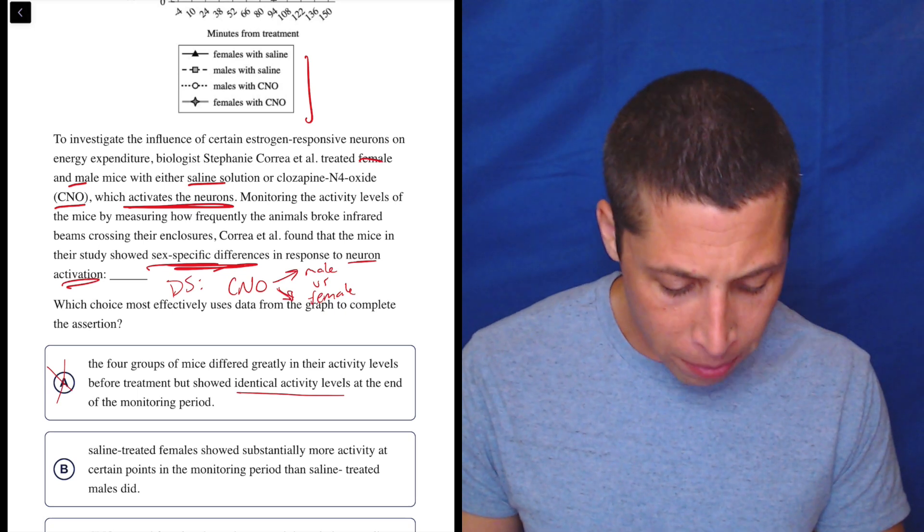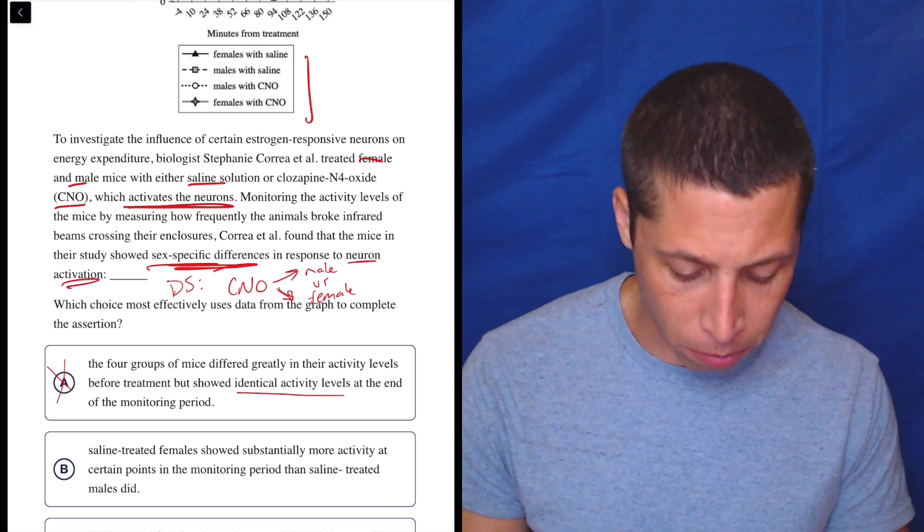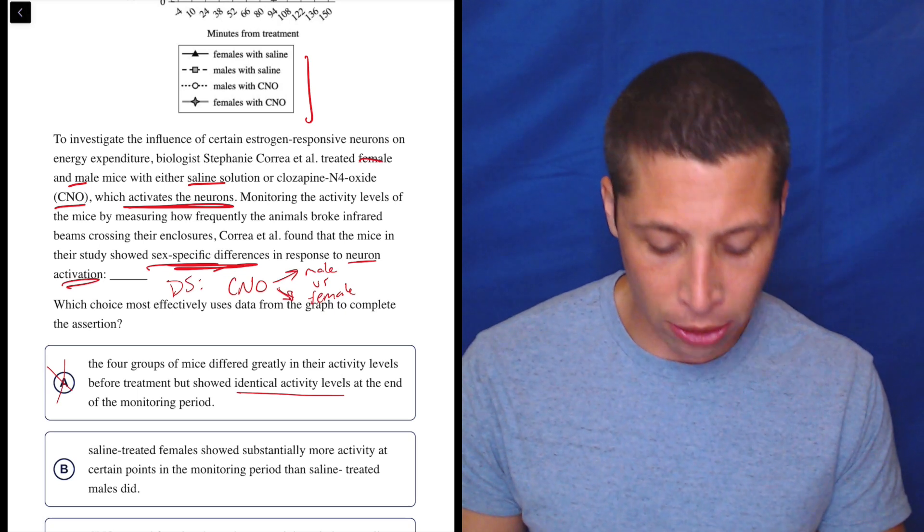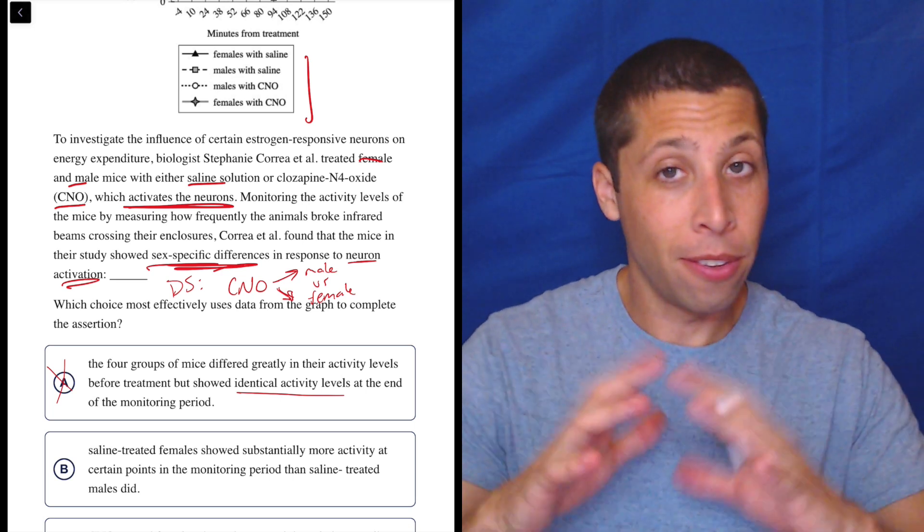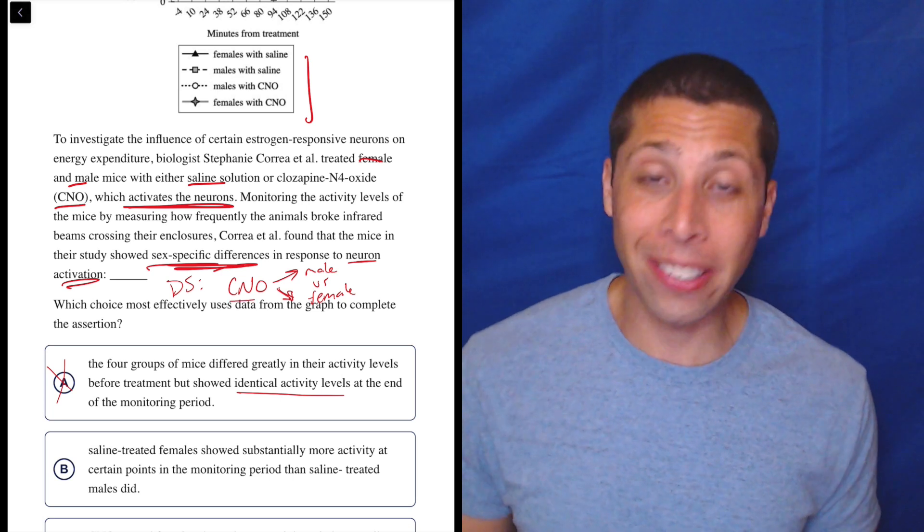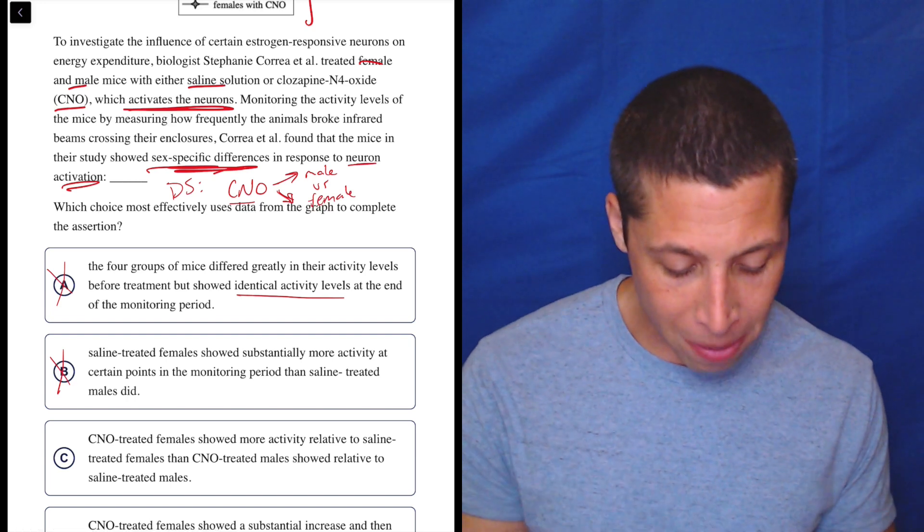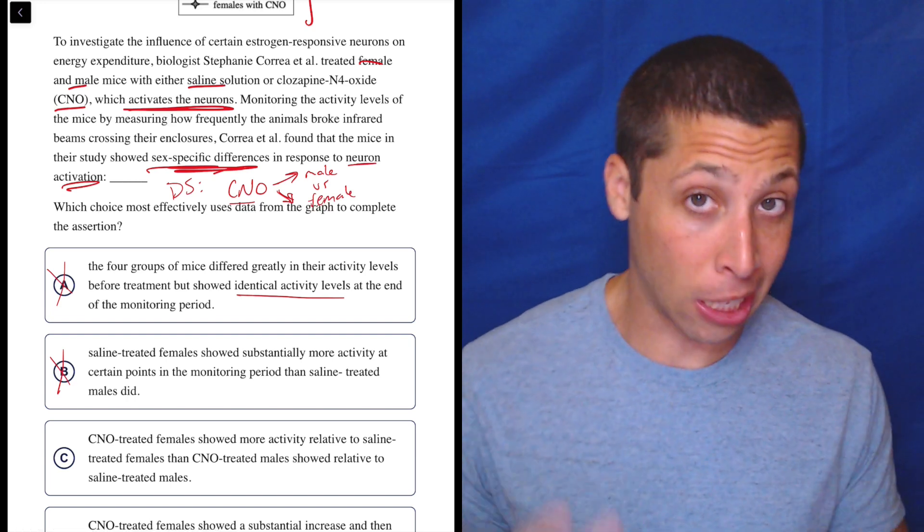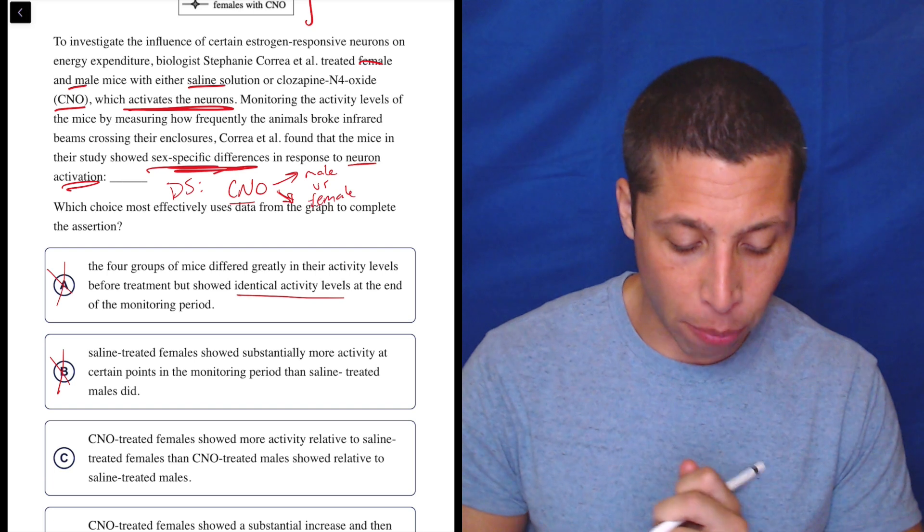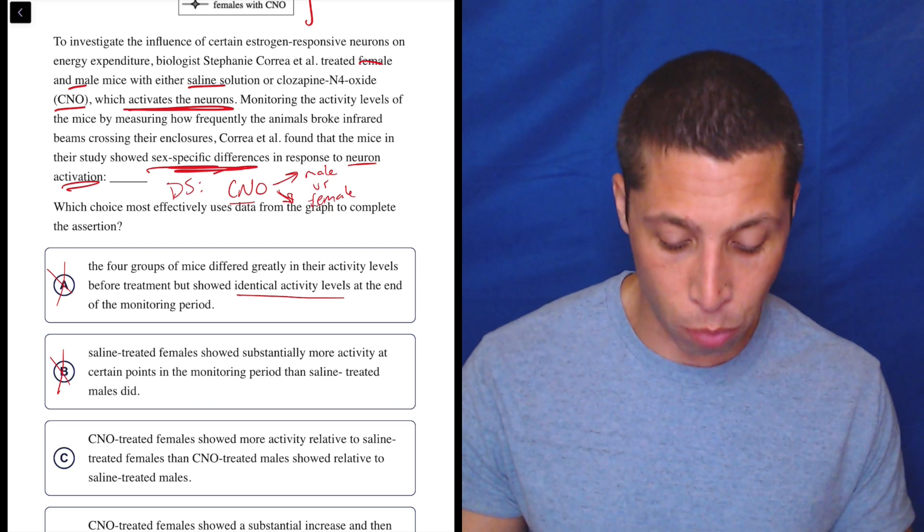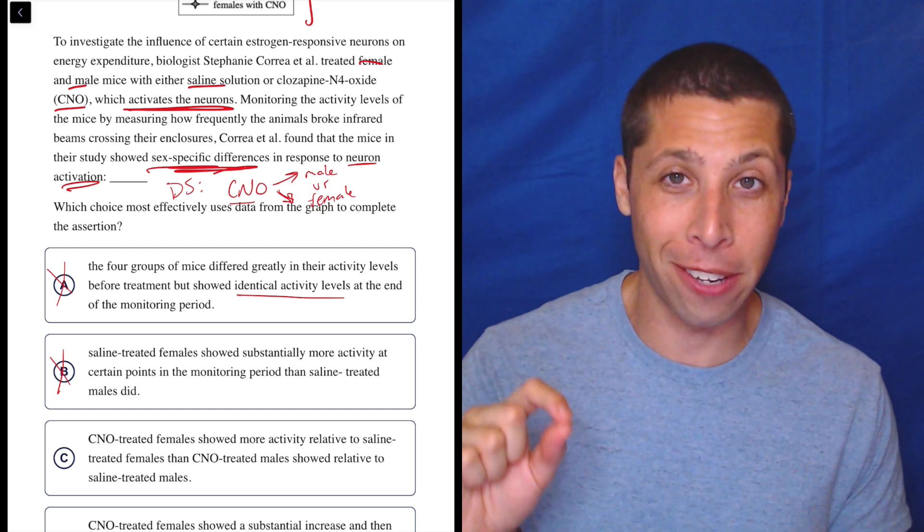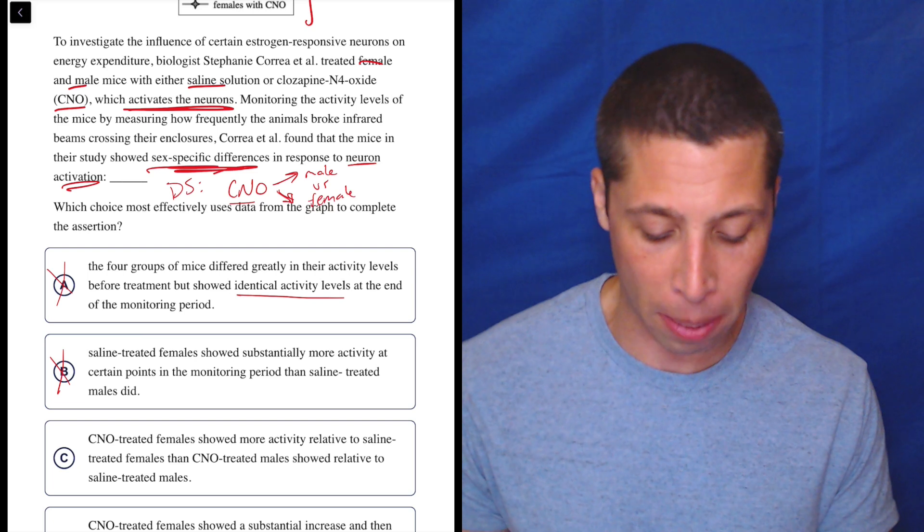B, saline treated females showed substantially more activity at certain points in the monitoring period than saline treated males did. This is CNO. It's got to be about CNO. This is not about CNO. This is about females versus males. So it's getting closer, but it's missing that key idea that we need to have the CNO be involved. So if we didn't see that from the paragraph, we might have been a little more tempted by B.